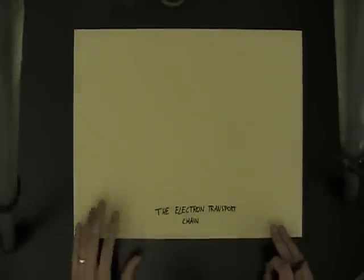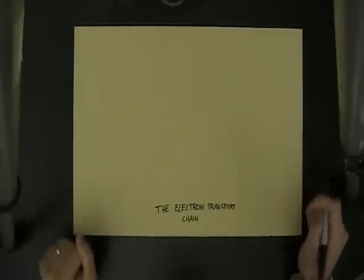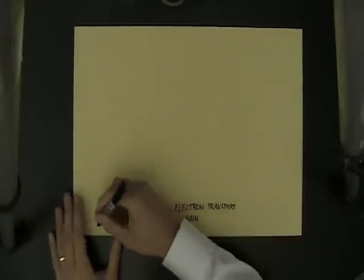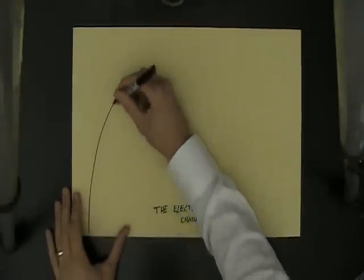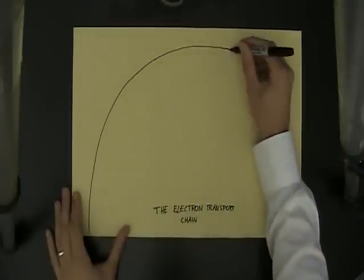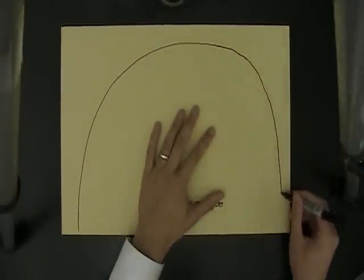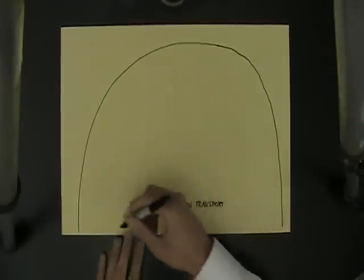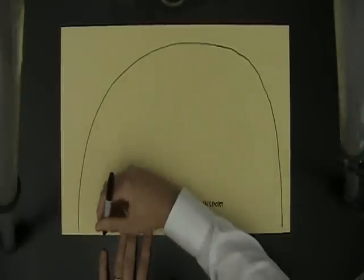So last video we looked at the Krebs cycle. This time we're going to look at the electron transport chain. Make sure you've got some paper so you can draw along. Remember all of this is taking place inside of a mitochondria. So I'm just going to draw the outer membrane of the mitochondria around here like this. And then remember it has a folded inner membrane. Now I'm not going to exaggerate the folds much.